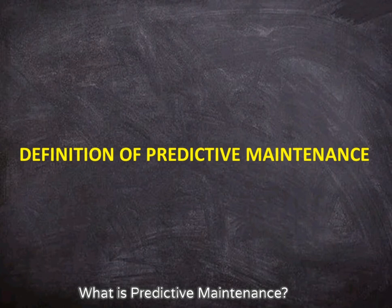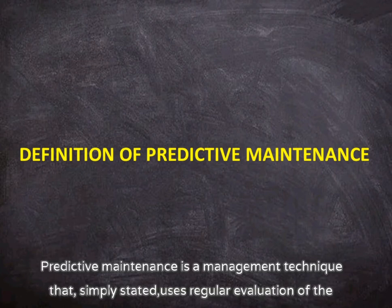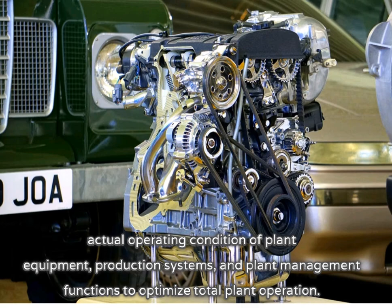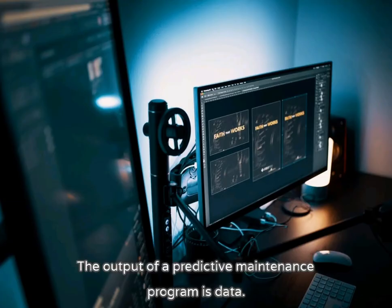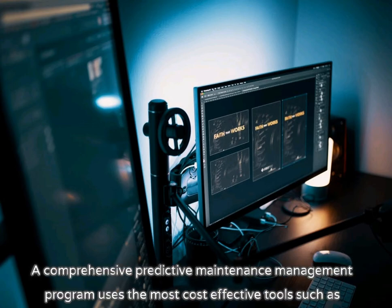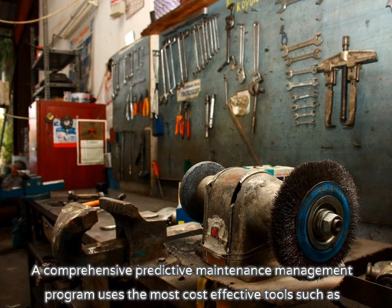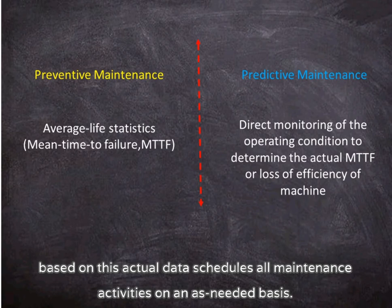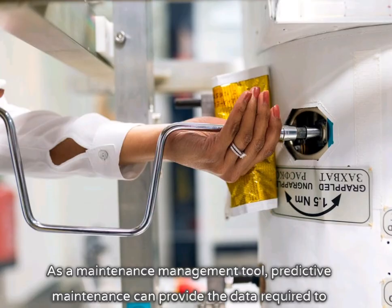What is predictive maintenance? Predictive maintenance is a management technique that, simply stated, uses regular evaluation of the actual operating condition of plant equipment, production systems, and plant management functions to optimize total plant operation. The output of a predictive maintenance program is data. A comprehensive predictive maintenance management program uses the most cost-effective tools such as vibration monitoring, thermography, and tribology to obtain the actual operating condition of critical plant systems and based on this actual data schedules all maintenance activities on an as-needed basis.